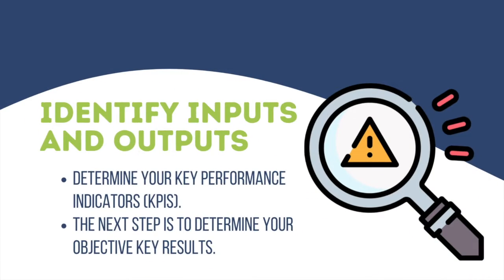Number 2: Identify inputs and outputs. Determine your key performance indicators, KPIs. Each goal should have key metrics and results that will help you measure if you're achieving them. The next step is your objective key results — these are the metrics that influence your high-level goals.